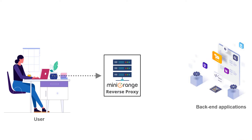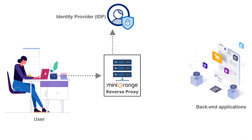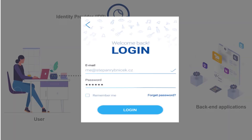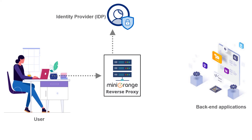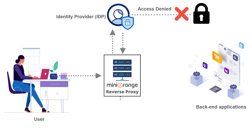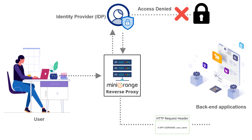The user sends the sign-on request to the proxied application. The reverse proxy server will initiate an authorization request to the IDP. The user will enter the credentials in the IDP, and if authenticated, it will send an HTTP request to the reverse proxy server; else, the access will be denied.